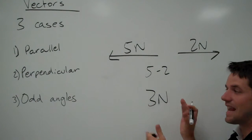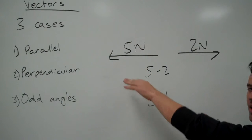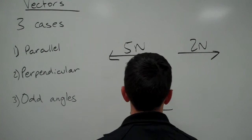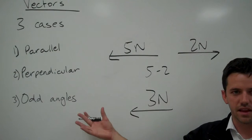So I've given you its magnitude, now I need to figure out its direction. Because my 5 newton vector was the larger one, that's the way that's going to win out. I have a 3 newton vector that's going in that direction.